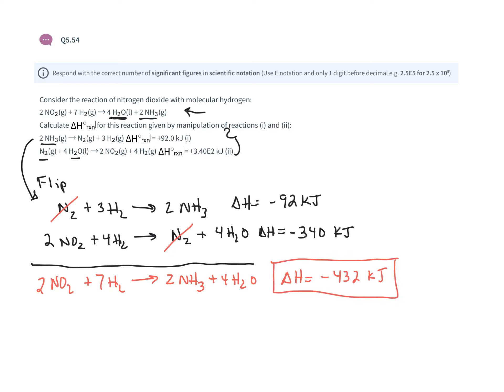This is a Hess's law calculation. Enthalpy being a state function allows us to add these reactions to determine the ΔH of the unknown reaction. Because enthalpy is path-independent, only the starting and ending energy states matter—not whether the reaction occurs in one step or multiple steps. The overall enthalpy remains the same.